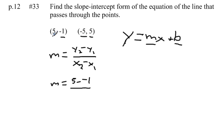so we'll say 5 minus negative 1 over x2 minus x1. So here's our x2, here's our x1, so we'll say negative 5 minus 5.